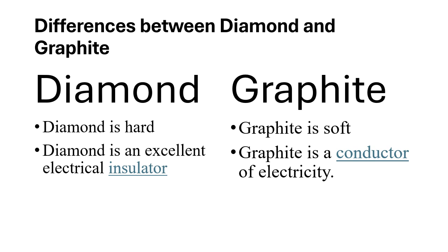We are going to talk about differences between diamond and graphite. Remember, these are the main allotropes of carbon which are crystalline. Diamond is hard, while graphite is soft. Another difference: diamond is an excellent electrical insulator, while graphite is a conductor of electricity.